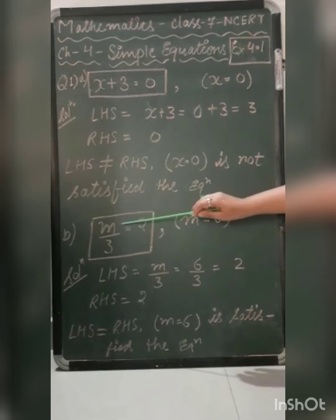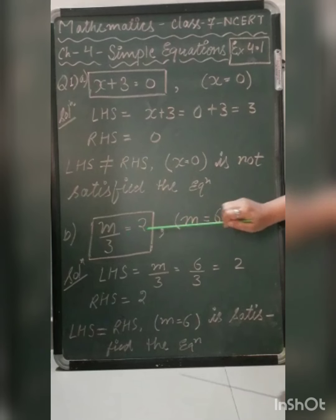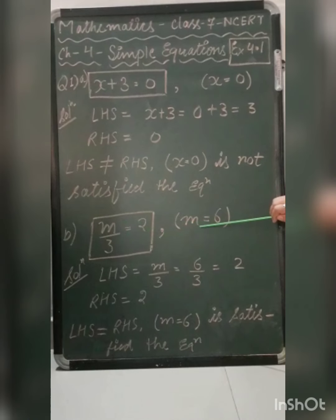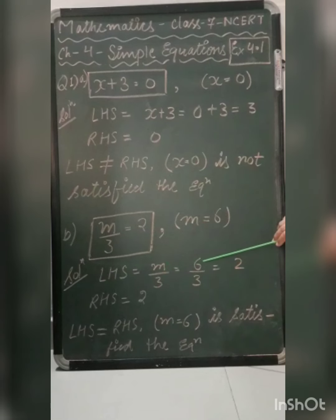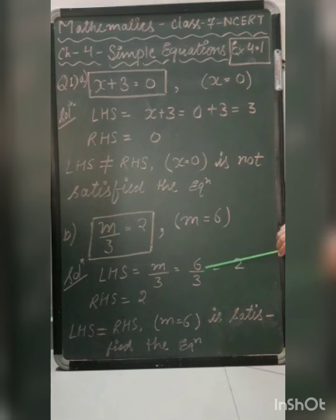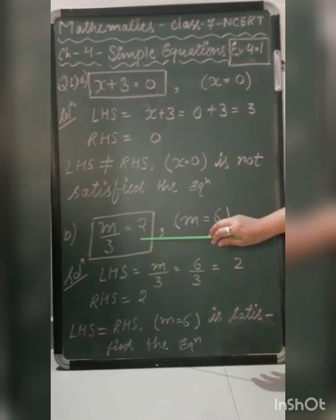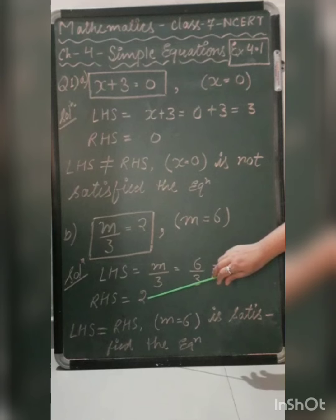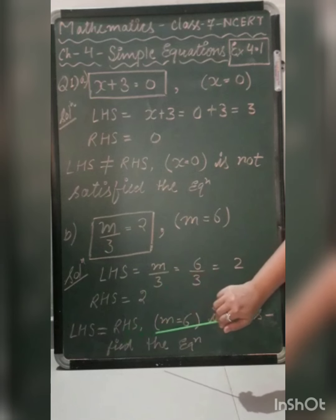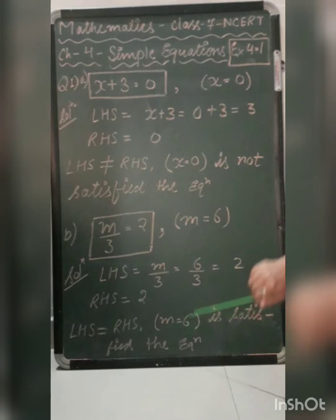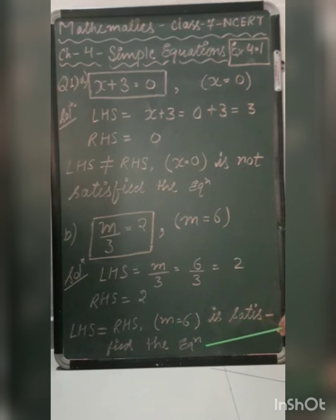The next equation is m upon 3 equal to 2. The value of m given is 6. We apply the same method. The left hand side is m upon 3. In place of m, we write 6: 6 upon 3 equals 2. The left hand side value is 2, and the right hand side value is also 2. Both sides are equal, so m equal to 6 satisfies the equation.